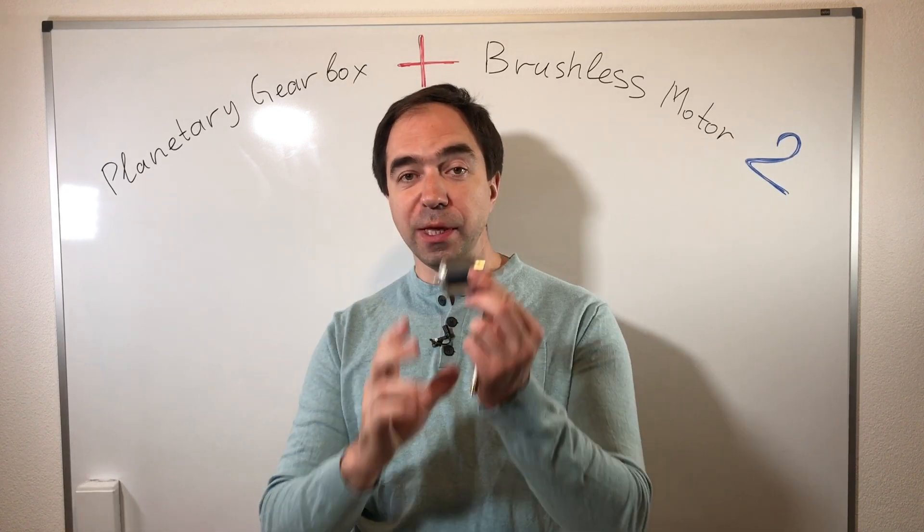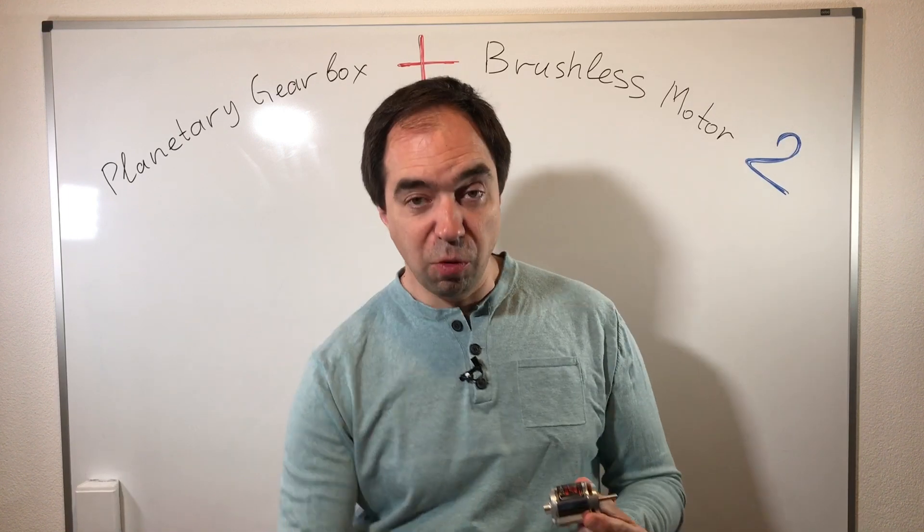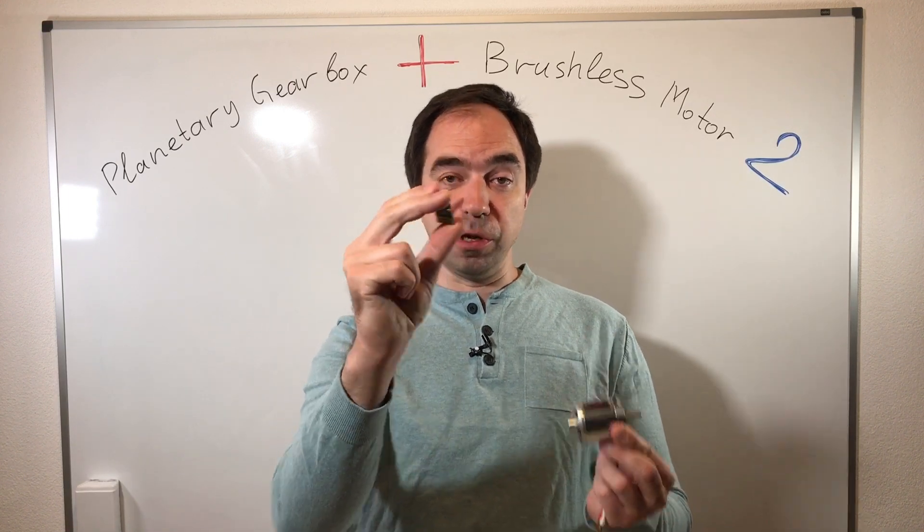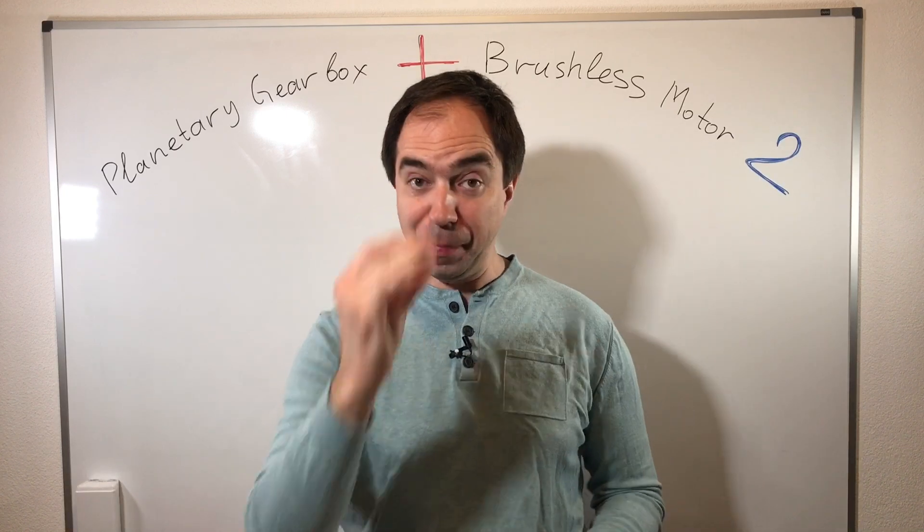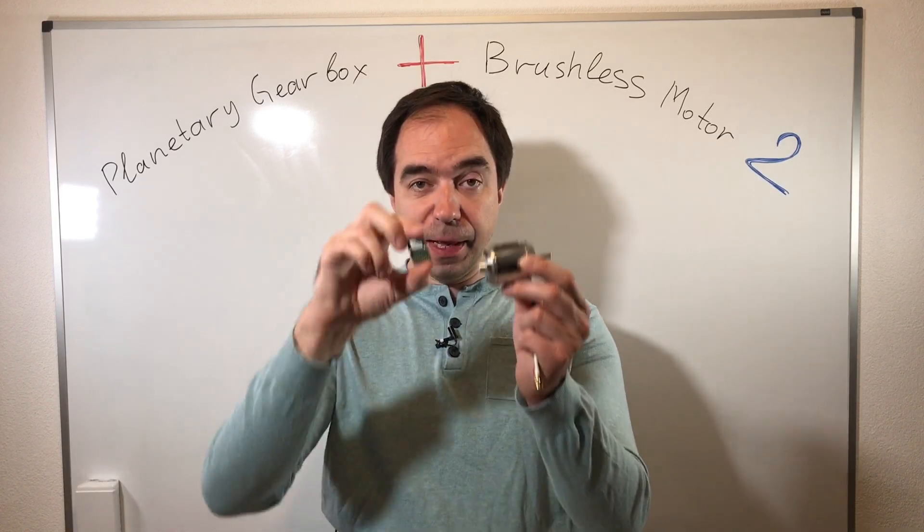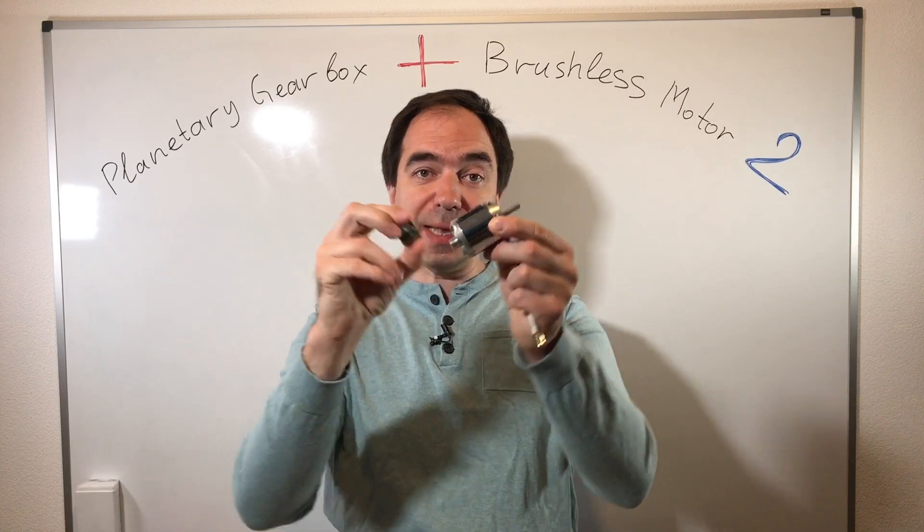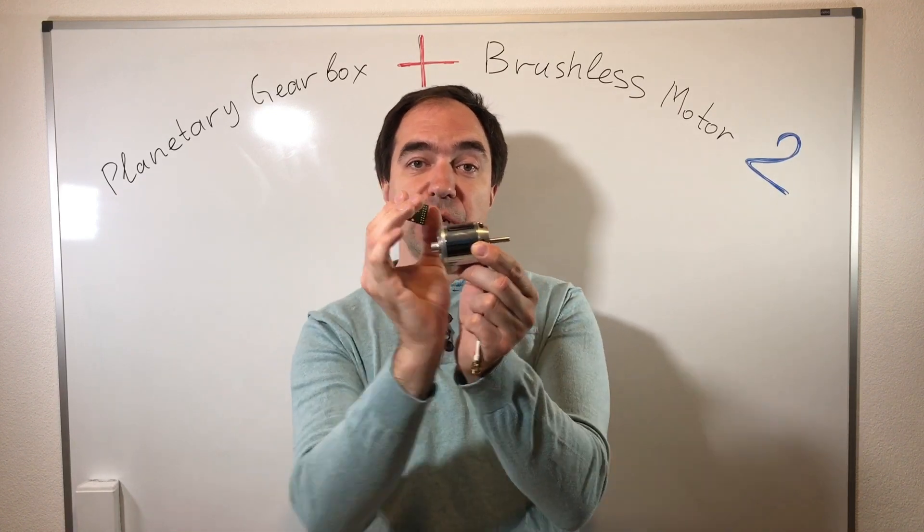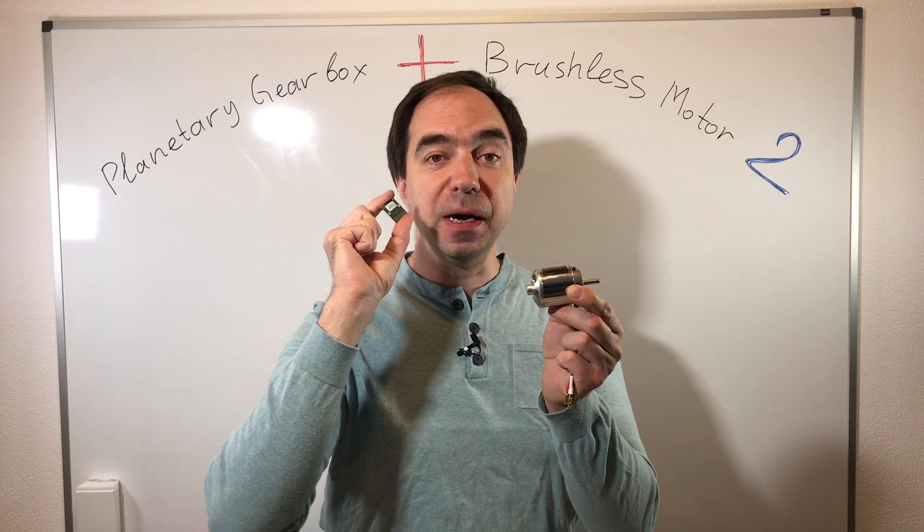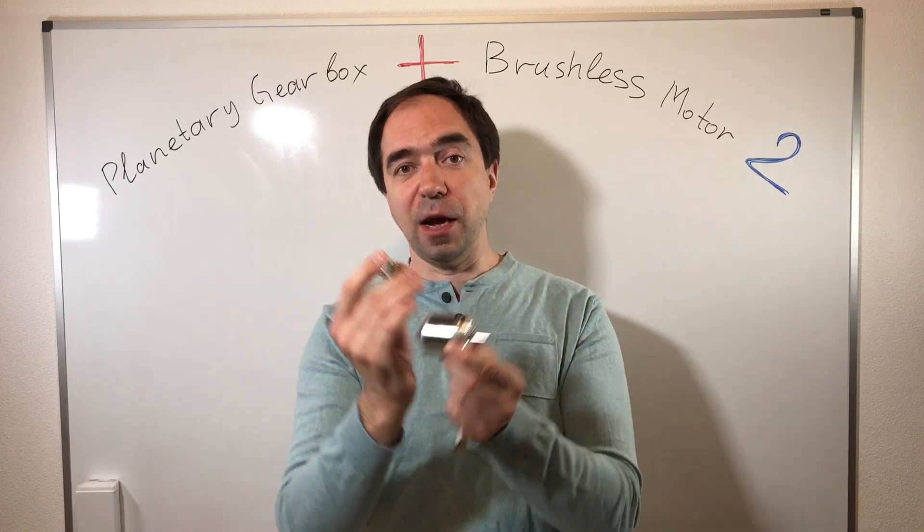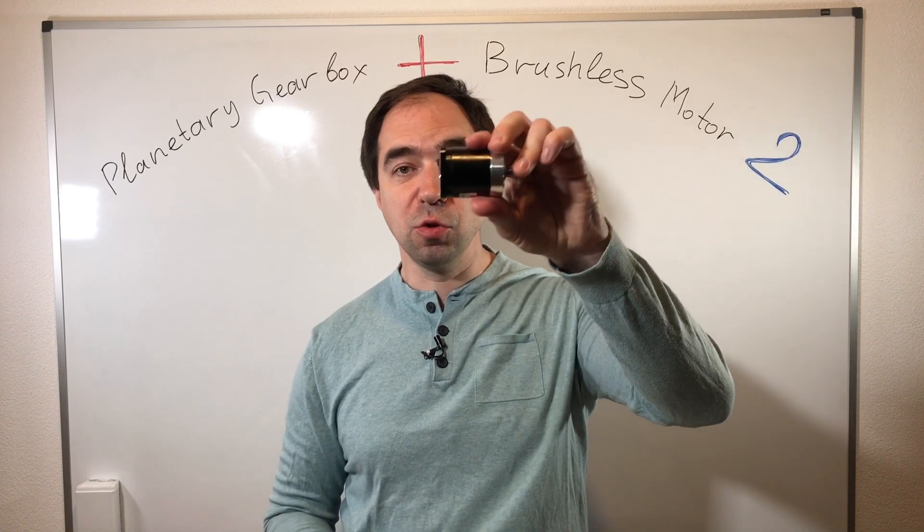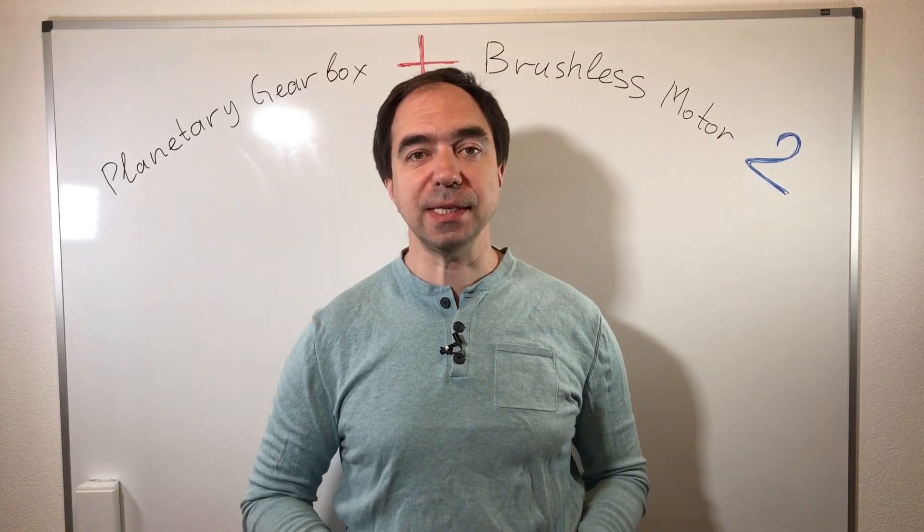So we want to take this brushless motor and connect this encoder to this brushless motor. This is AS5047P encoder, a magnetic encoder. When we connect it, we will have an assembly which we could use instead of a standard NEMA 17 stepper motor. And afterwards we're going to connect it to this planetary gearbox. So let's get started.